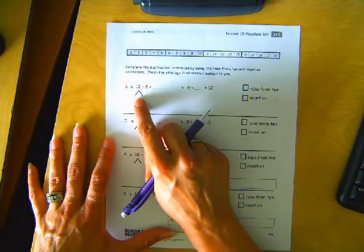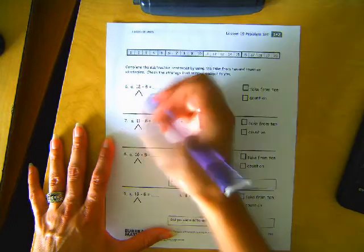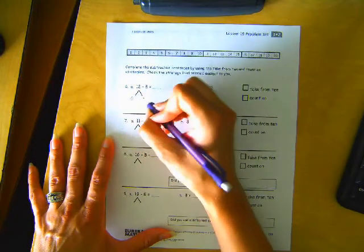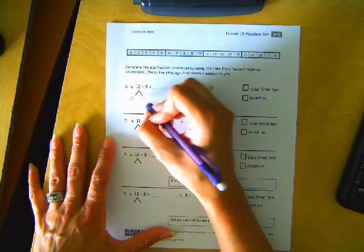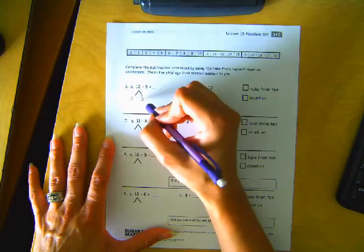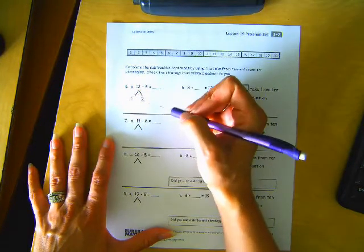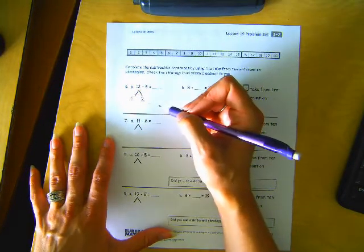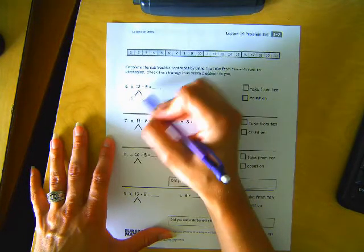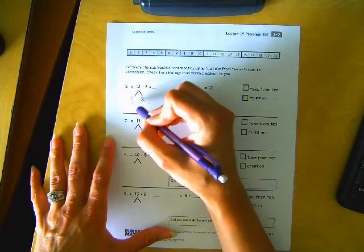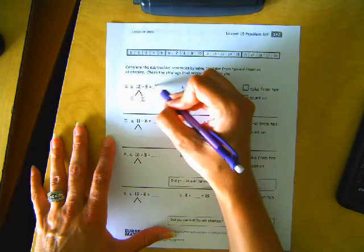So we're going to do the take from 10. So we need to make a 10 and then a 2 because 10 and 2 make 12. If we took away 8 from 10, that would leave us with 2 left plus this 2. So that would be 4.